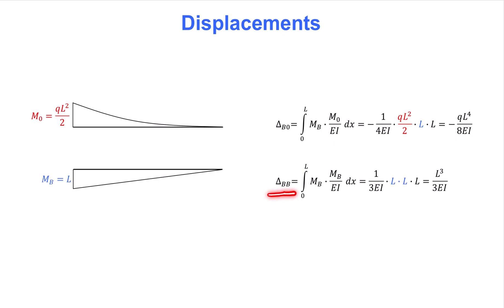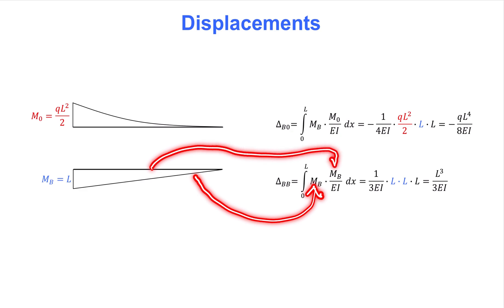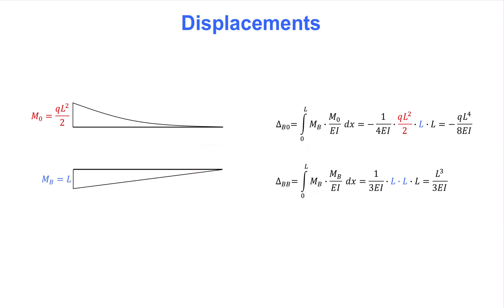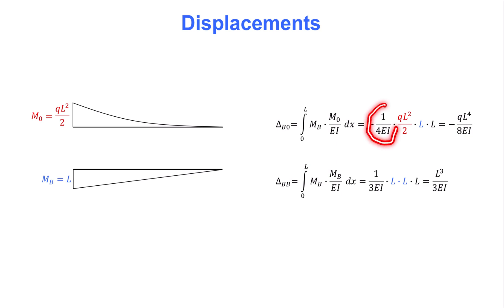Next, consider the calculation of delta_BB. Again, the virtual work method requires applying a unit load at B to find the displacement there, so the blue moment diagram is the virtual moment diagram. Because delta_BB is the displacement at B due to a real unit force at B, the real bending moment diagram is the same as the virtual diagram — we find delta_BB by combining the blue moment diagram with itself. Notice the factor 1/(4EI) when combining a parabola with a triangle, and 1/(3EI) when combining a triangle with a triangle with the zero value at the same location. Delta_B0 is negative because the two bending moment diagrams have tension on different sides of the beam.